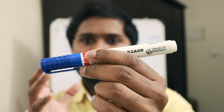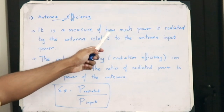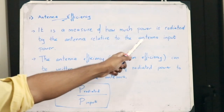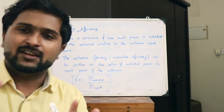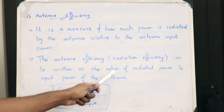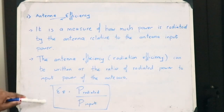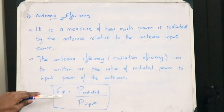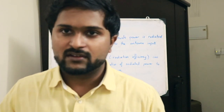Antenna efficiency is a measure of how much power is radiated by the antenna relative to the antenna input power. The antenna efficiency, or radiation efficiency, can be written as a ratio of radiated power to the input power. That is basically the expression for the efficiency of an antenna — radiated power divided by input power. That is antenna efficiency. Now the second parameter we are going to see is antenna gain.